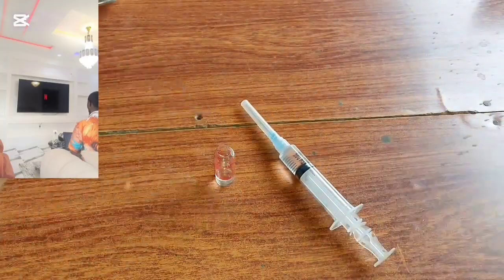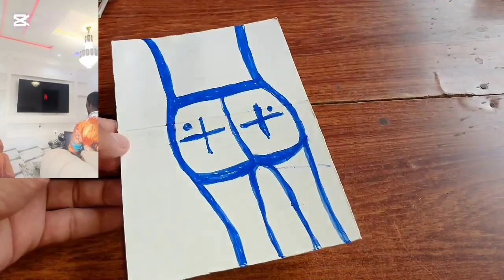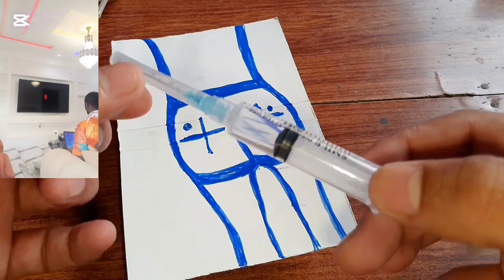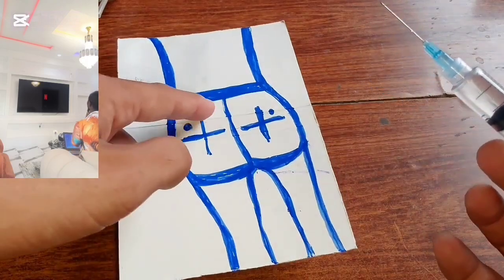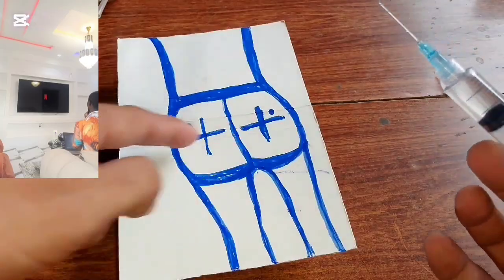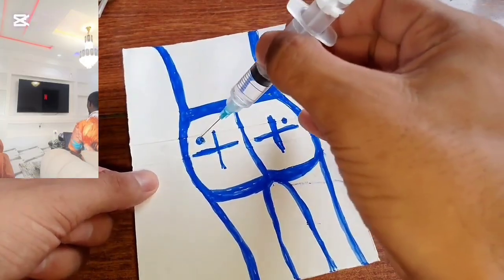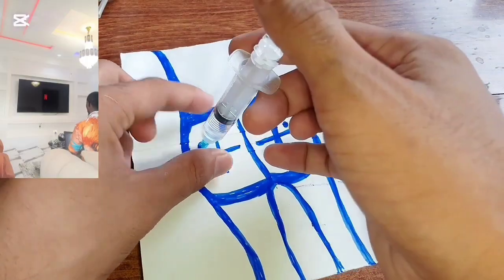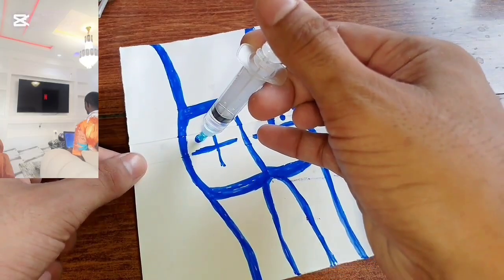This is just a quick tutorial. This is assumed to be a human buttock. Before then, you want to make a cross sign from top to bottom, and make sure you administer at the upper outer quadrant. This is the left buttock.